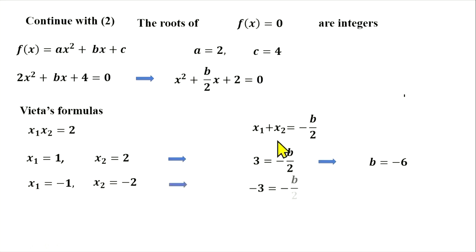We plug in here negative 3, the sum of this, equal negative b over 2. From here we have b equal 6.